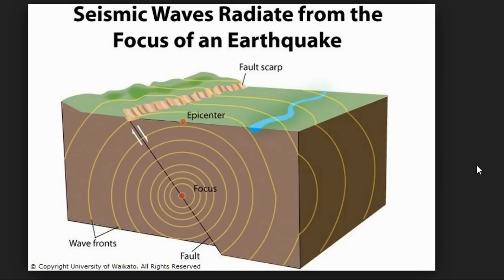Seismic waves propagate away from the source just like a ripple in a pond. Even tremor acts this way. And this isn't just for tectonic activity or just earthquakes — this goes for anything occurring underground. Any type of event that occurs underground, especially at depths deeper than a thousand feet or more, will show up on many surrounding stations depending on a multitude of factors, including the depth of the event, the strength of the event, and the density of the seismic network.